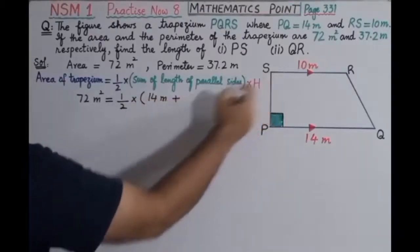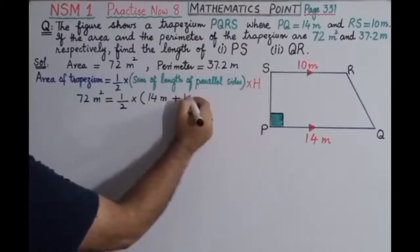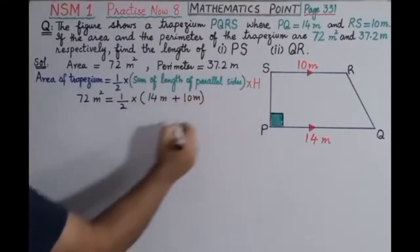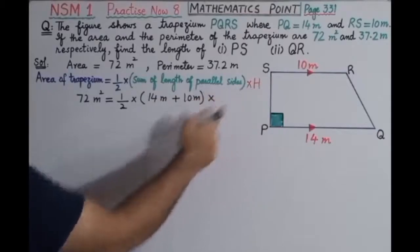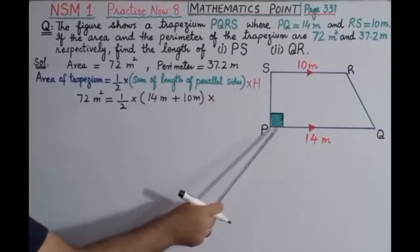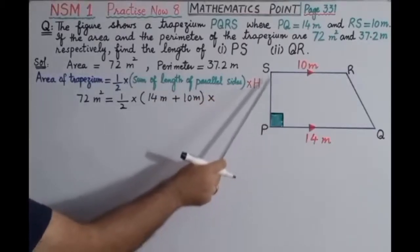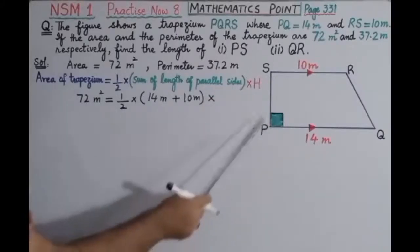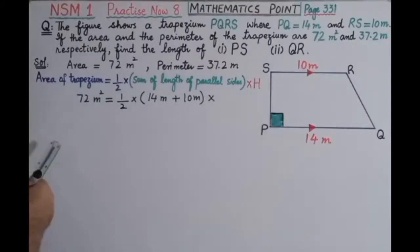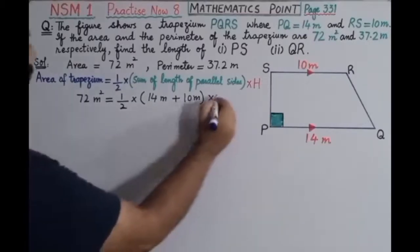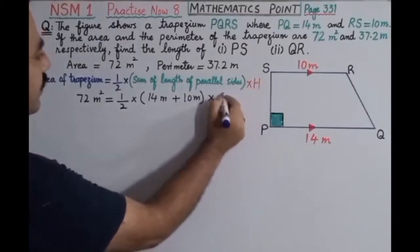So we write the sum as 14 meters plus 10 meters, multiplied by the height. The height PS is not given — we have to find it — so we write 'height = PS'.